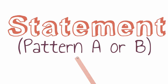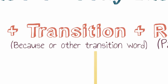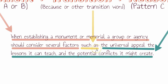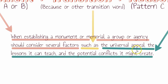For that prompt, the statement portion might look something like this: 'When establishing a monument or memorial, a group or agency should consider several factors.' Then you're going to have your transition word — because wouldn't really fit how this prompt is worded, so we would use 'such as' — and then finally you would have your reason portion: the universal appeal, the lessons it can teach, and the potential conflicts it might create.